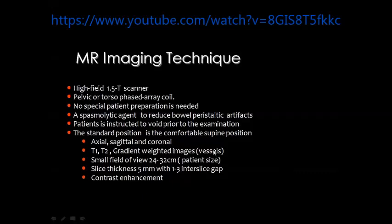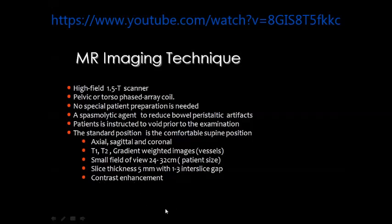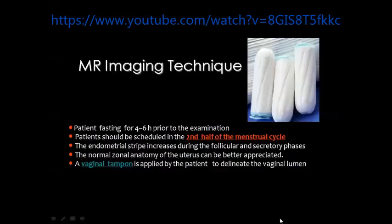Patients are instructed to void prior to the examination. Nowadays the examination is not that long, so the patient can tolerate the exam without the need to go to the toilet. The standard position is the comfortable supine position. We use all available pulse sequences including T1, T2, and gradient images in the axial, sagittal, and coronal planes. The field of view is selected to suit the patient's size, with 5 mm slice thickness and about 2 mm inter-slice gap. In many conditions we need to inject contrast material.